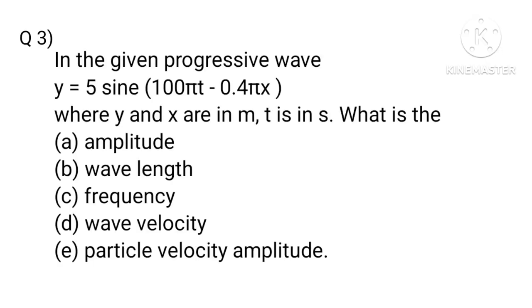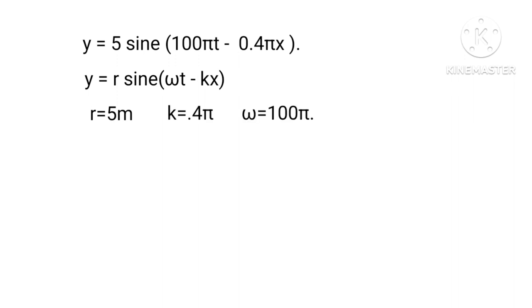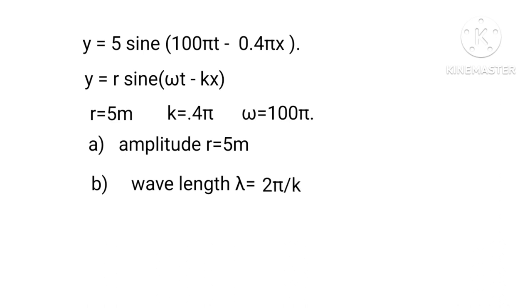In the given progressive wave y = 5 sin(100πt - 0.4πx), where y and x are in meters and t is in seconds, find: (a) amplitude, (b) wavelength, (c) frequency, (d) wave velocity, and (e) particle velocity. Comparing with y = R sin(ωt - kx): R = 5 m, k = 0.4π rad/m, ω = 100π rad/s. Therefore amplitude R = 5 m, and wavelength λ = 2π/k = 2π/(0.4π) = 5 m.